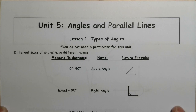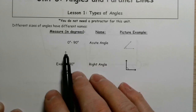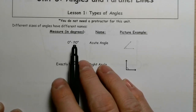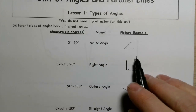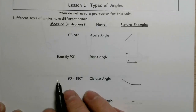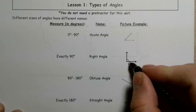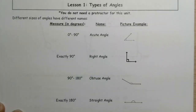Before we get to that, let's talk about the vocabulary. If you've got an angle that measures from 0 to 90 — not including 90 — that's an acute angle. So if it's smaller than 90 degrees, it's an acute angle. If it's exactly 90 degrees, we call that a right angle. Often times instead of seeing that little curve, what you'll see is a little box to indicate that it's a squared angle.